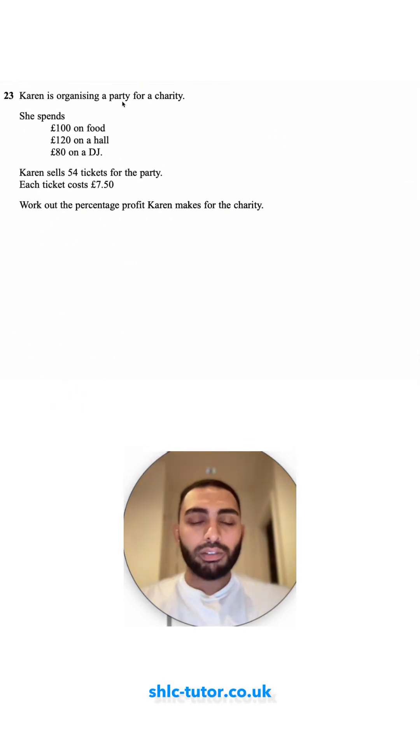Question 23. Karen is organising a party for a charity. She spends £100 on food, £120 on a hall and £80 on a DJ.